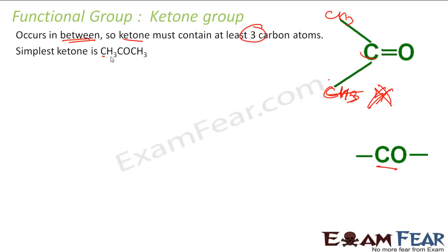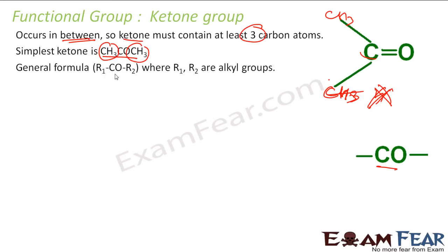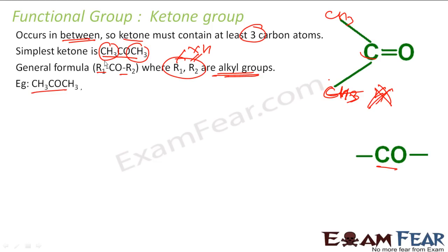So the simplest ketone, as I told, is CH3-CO-CH3. You add CH3 here and CH3 here — that is the simplest ketone. And this is called propanone. The general formula is R1-CO-R2, where R1 and R2 are alkyl groups. Please note that R1 and R2 cannot be hydrogen; they have to be alkyl groups.